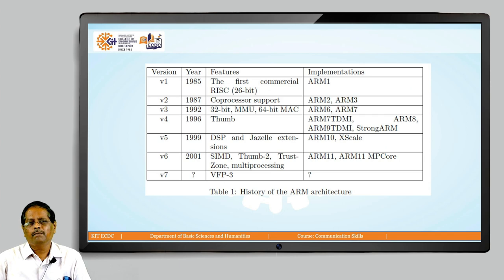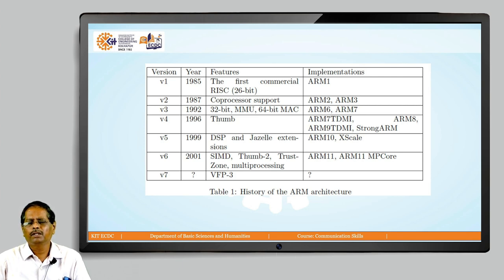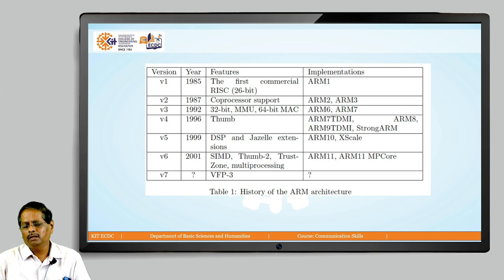Looking at the version table, ARM has released different versions of processors from version 1 up to version 7. The table shows version, year, features, and implementation columns. For example, version V4 was introduced in 1996 and supported the Thumb instruction set. There were many implementations of the same version, like ARM7TDMI-S, ARM9TDMI, ARM8, and StrongARM. So within one version, with minor feature variations, many implementations are released.